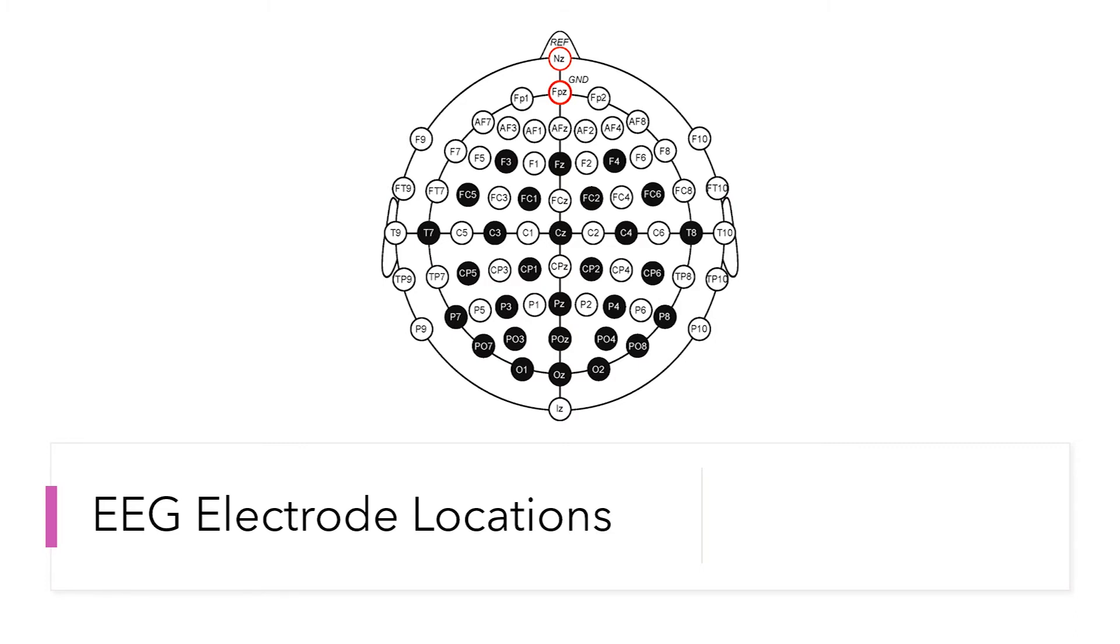Each electrode placement site has a letter to identify the lobe or the area of the brain it is reading from. Initially, these locations are categorized as follows: Prefrontal defined as FP, Frontal defined as F, Temporal defined as T, Parietal defined as P, Occipital defined as O, and Central defined as C.